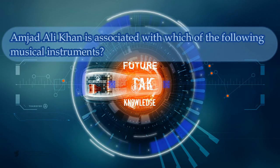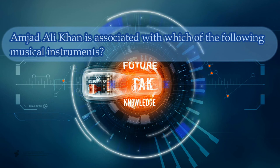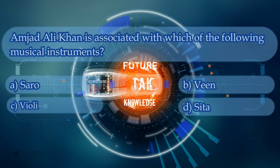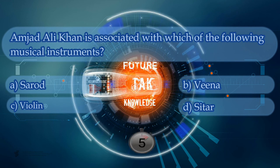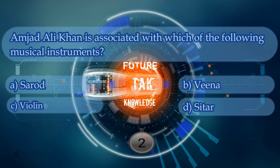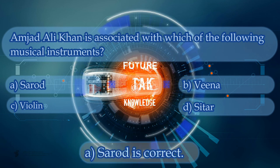Amjad Ali Khan is associated with which of the following musical instruments? Option A: Sarod. Option B: Veena. Option C: Violin. Option D: Sitar. Option A is correct.